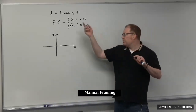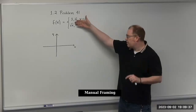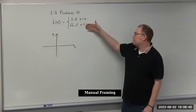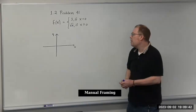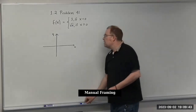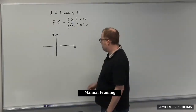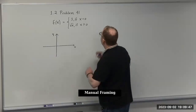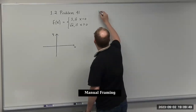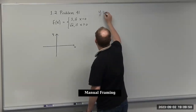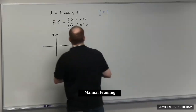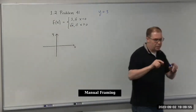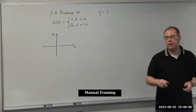Remember the strategy is to graph everything together, then go back and look at the restrictions and clean up from there. The first piece is basically just a constant, which we can express as y equals three — no matter what x is, we always get three.